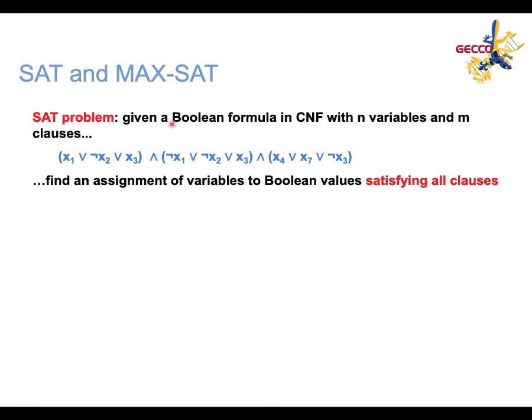Given a Boolean formula, the SAT problem consists in finding an assignment of variables to Boolean values such that the formula is satisfied. The formula is usually given in conjunctive normal form, that is a conjunction of clauses, and each clause is a disjunction of literals, and a literal is a variable or a negated variable. The goal is to find an assignment that satisfies all these clauses, and this makes the formula satisfiable.